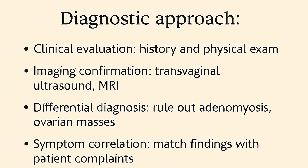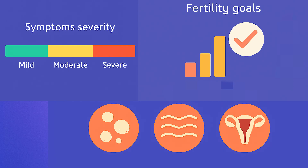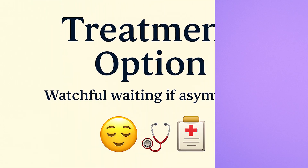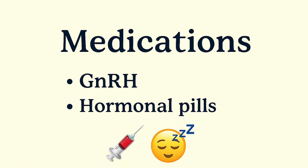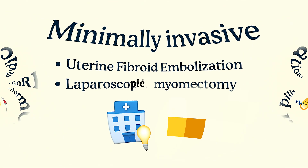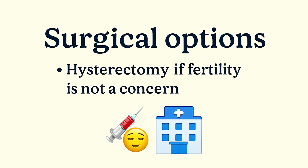Diagnosis typically involves imaging like ultrasound or MRI, helping doctors pinpoint the fibroid's location and size. Treatment depends on symptoms, size, and reproductive goals. Options range from watchful waiting if asymptomatic, to medication such as hormonal therapy to manage symptoms. Other options include minimally invasive procedures such as uterine fibroid embolization or laparoscopic myomectomy. Surgical options such as hysterectomy are applied if fertility is not a concern.